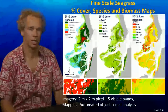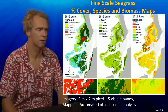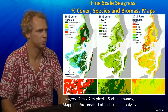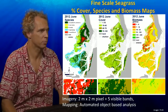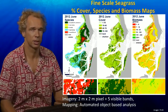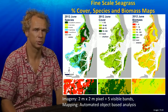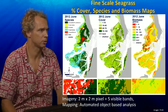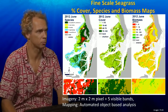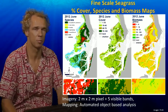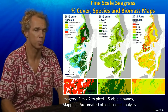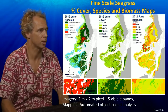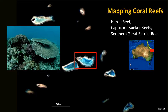Recently there are new methods where you can use higher resolution images with 2x2 meter pixel size and automated object-based approaches where you can get not only seagrass cover but also seagrass species composition on the left, seagrass cover in the middle, and biomass derived from it as well. On the bottom you see the detail that it provides over a small area.